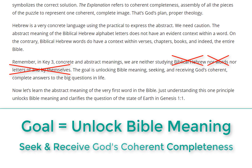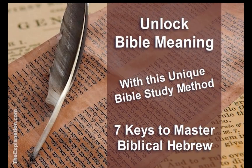In the next lesson, we'll learn the abstract meaning of the very first word in the Bible. Just understanding this one principle unlocks the meaning and clarifies the question of the state of the earth in Genesis 1 verse 1. Continue to follow this eye-opening audio Bible course, or the free text and video course at TheExplanation.com. All the Bible study tools for this course are freely available online at TheExplanation.com. Let's unlock Bible meaning with the 7 keys to Master Biblical Hebrew and reveal the explanation.